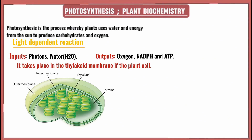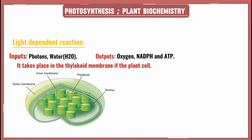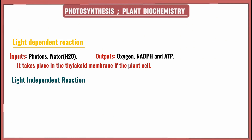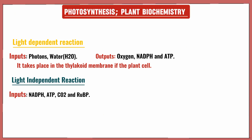The light-dependent reaction takes place in the thylakoid membrane of the plant cell. It works by photon excitation — a photon excites an electron. These photons are harnessed and transported into the electron transport chain, then back to lower energy states in the plant.